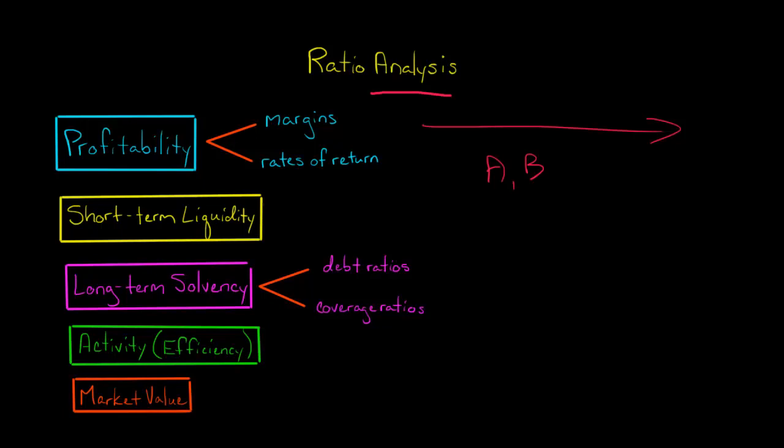People generally put ratios into five different categories. We've got profitability ratios, short-term liquidity, long-term solvency, activity, aka efficiency ratios, and market value ratios.